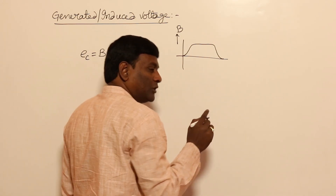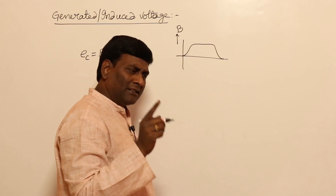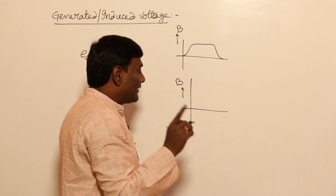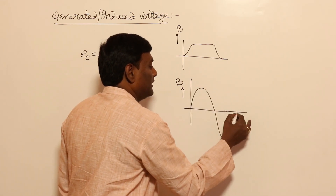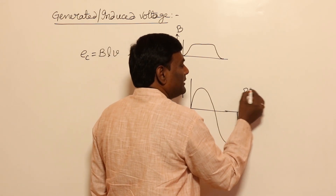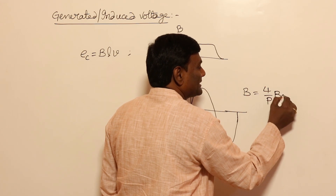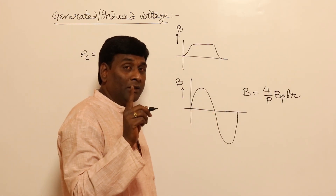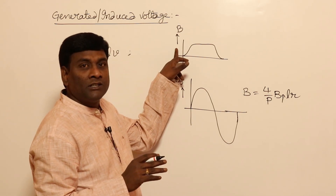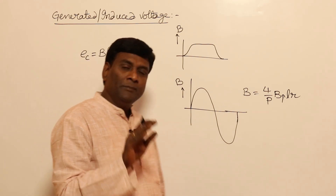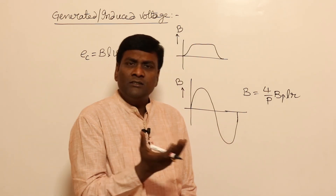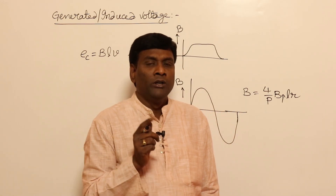For example, if it is sinusoidal — actually one time they have given one question in the calculation of induced voltage; I don't exactly remember if it was GATE or ESE or somewhere. They have given the flux density waveform and clearly said flux density is sinusoidally distributed. So in that case, we have one equation: B_average = (4/P) * B_maximum * L * R. Remember that in your examination, if they give you average flux density, we have to use this equation.